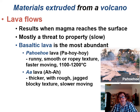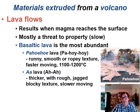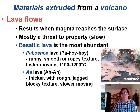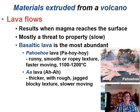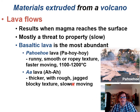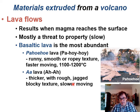Pāhoehoe literally means ropey texture in Hawaiian — it's runny and smooth and it kind of folds over as it flows. You can see this folding-over type texture in the photograph. The a'ā lava is much thicker, slower moving, lower temperatures generally — around 1,000 to 1,100 degrees Celsius — and it's thick, rough, jagged, and blocky texture. Literally, the word a'ā translates as blocky texture.